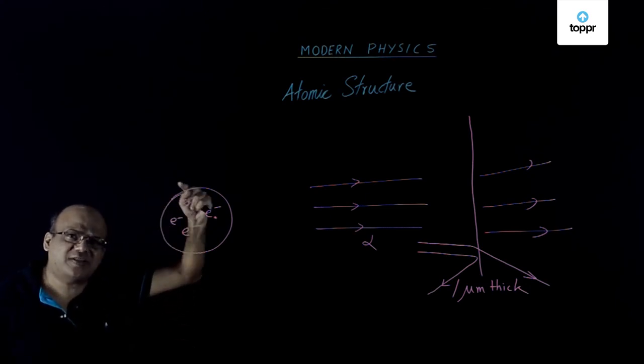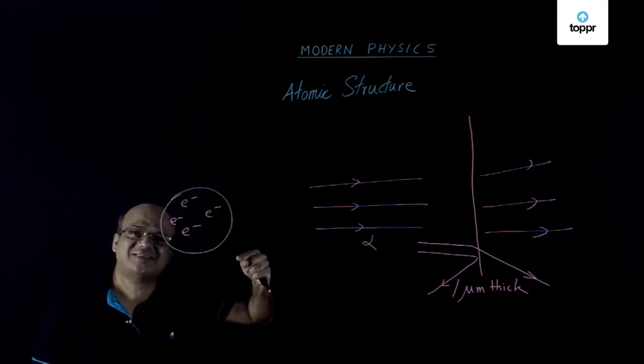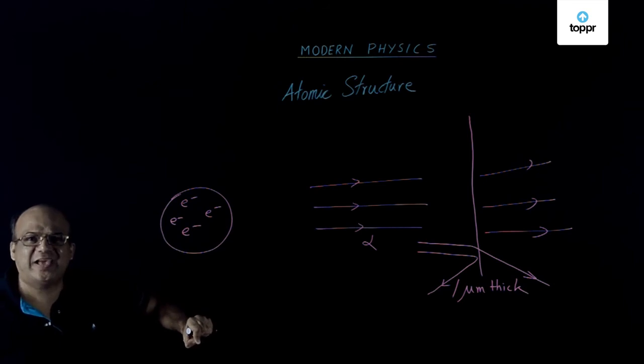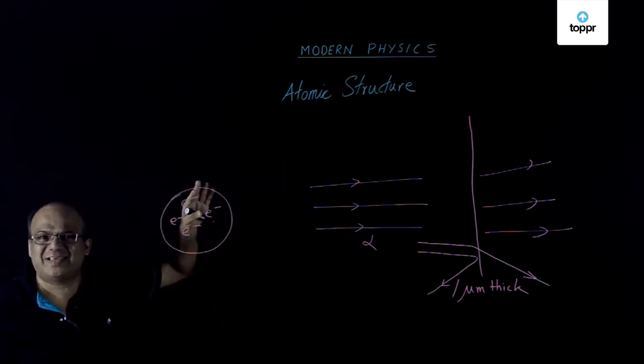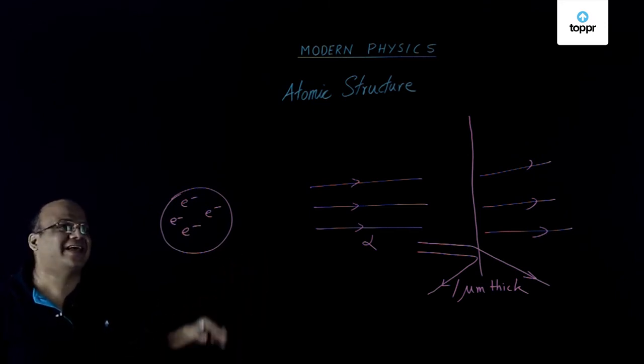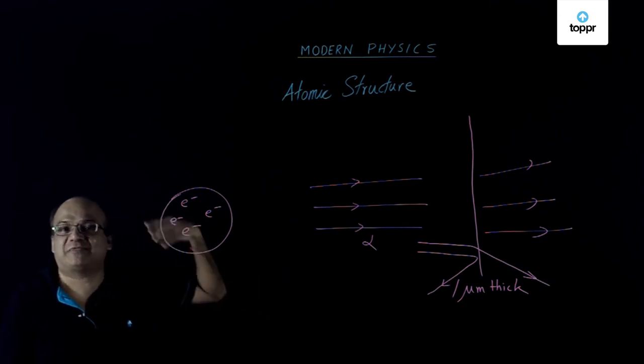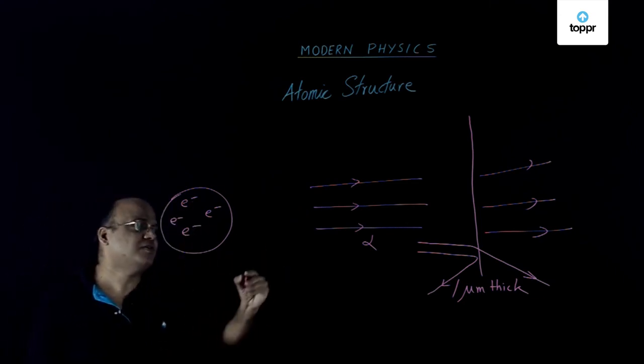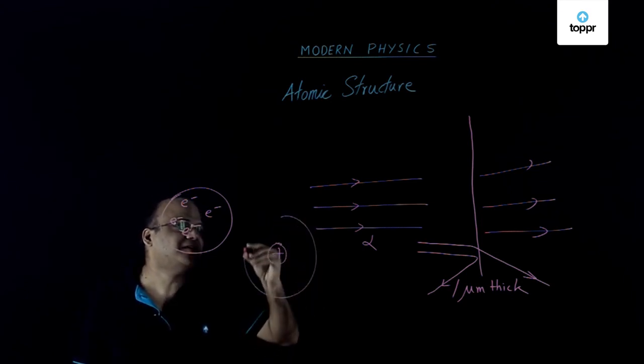When an electron moves in a circular orbit, it is an accelerated charge. Whenever a charged particle accelerates, it will radiate energy. And hence, it will lose energy. It will emit radiation, electromagnetic radiation that we learnt. Therefore it will lose energy. And therefore, the electron should follow a spiral path and fall into the nucleus.